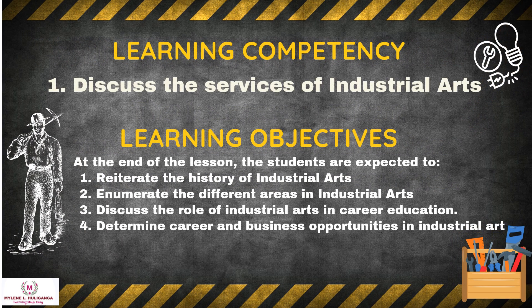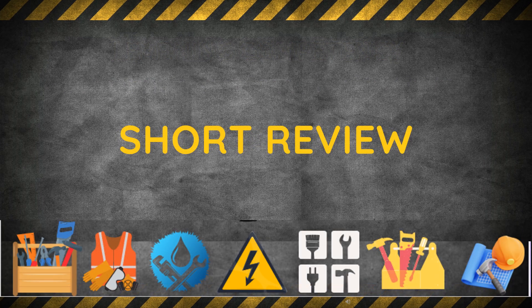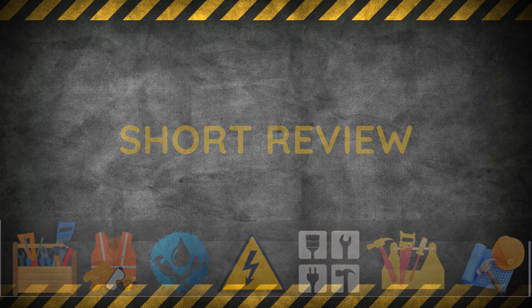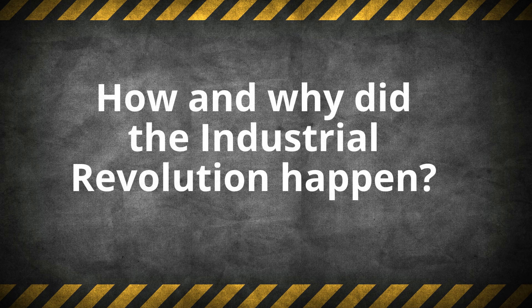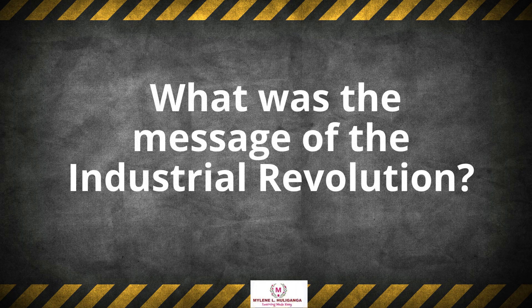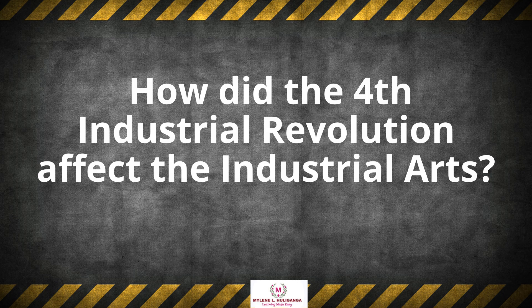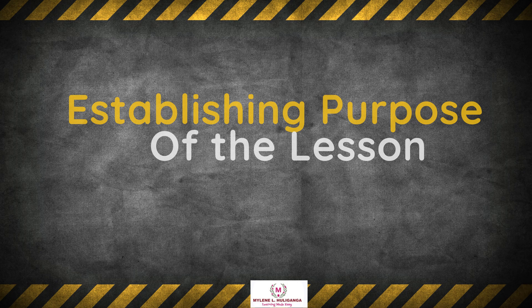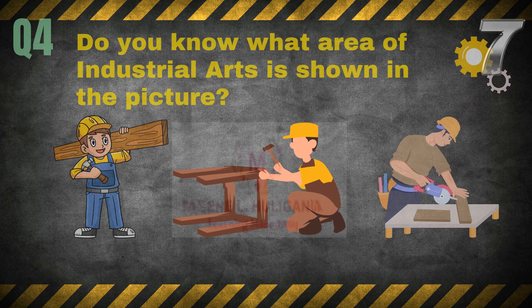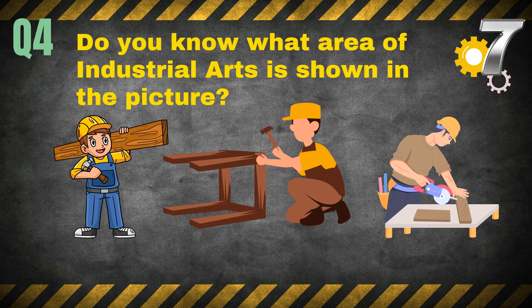Here are the learning competency and learning objectives for this lesson. How and why did the Industrial Revolution happen? What was the message of the Industrial Revolution? How did the Fourth Industrial Revolution affect the industrial arts? Do you know what area of industrial arts is shown in the picture?